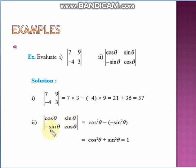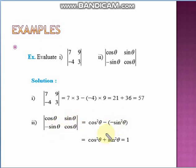Second example: evaluate the determinant with elements cos θ, sin θ, -sin θ, cos θ. It equals cos θ into cos θ minus (-sin θ) into sin θ, which is cos²θ plus sin²θ, which equals 1. So 1 is the value of this determinant.